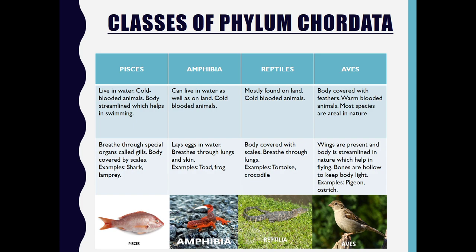Coming to the next class of Phylum Chordata, Amphibia: animals of Amphibia can live in water and also on land. They are also cold-blooded animals. They lay their eggs in water and breathe through their lungs and also through their skin. Examples are toad and frog. When in water, they breathe through their skin; when on land, they generally breathe through their lungs.